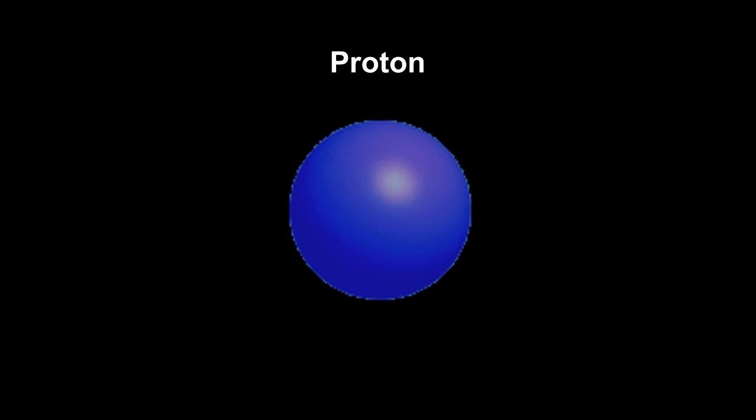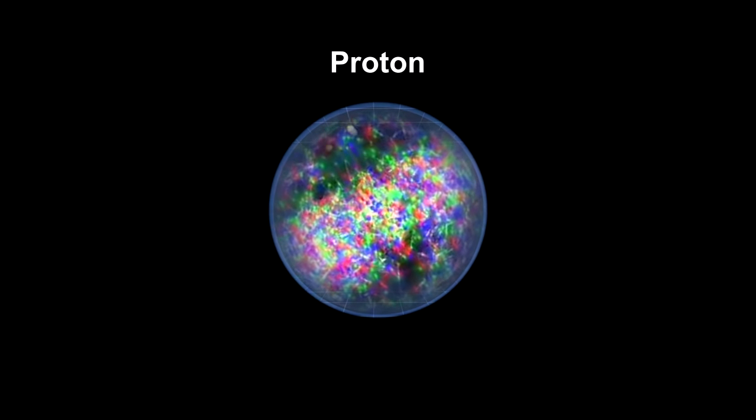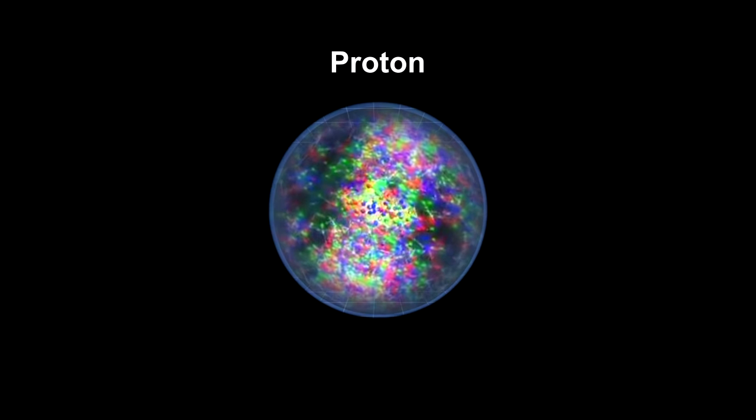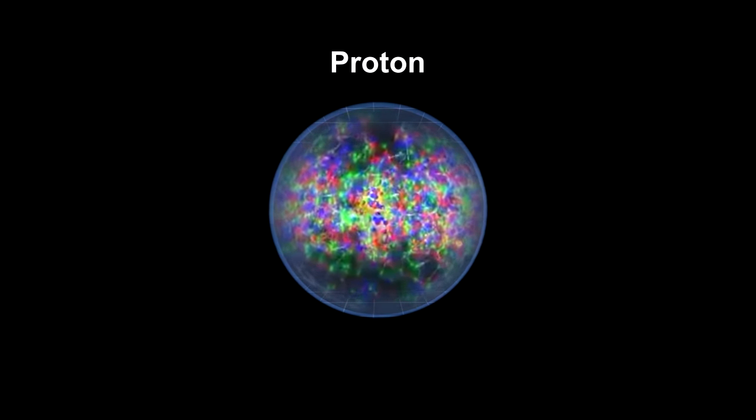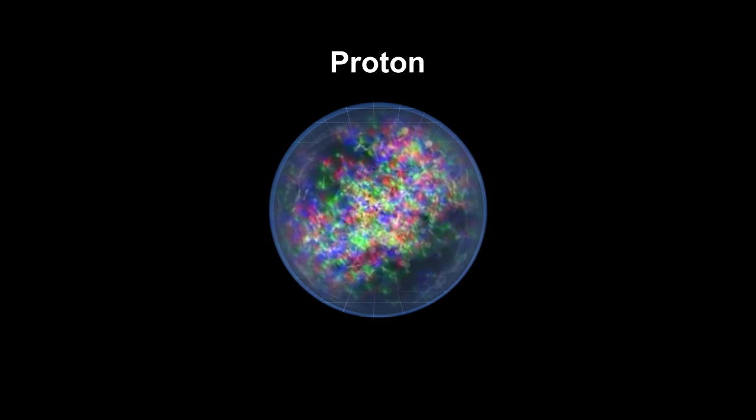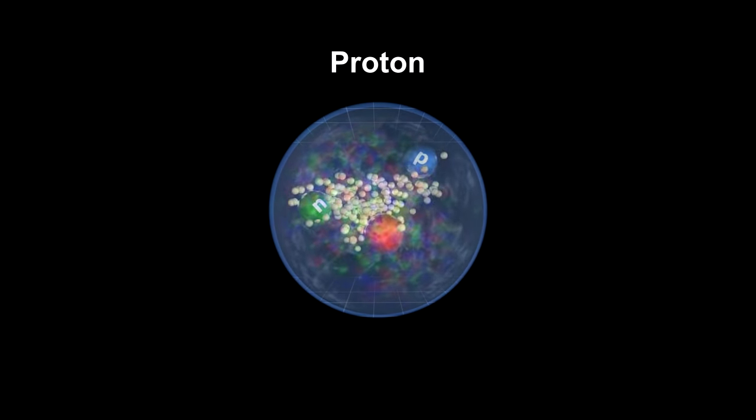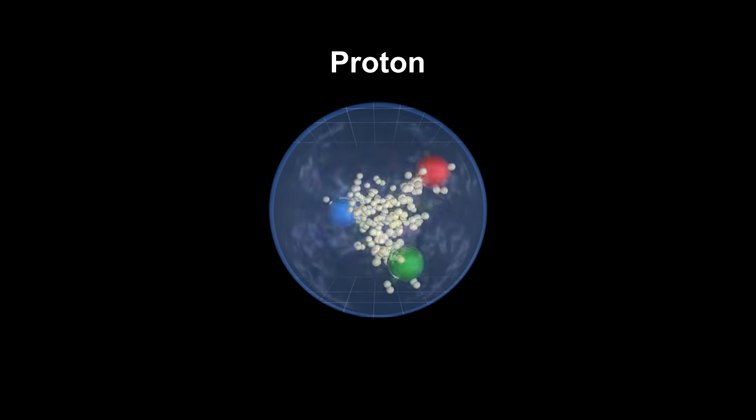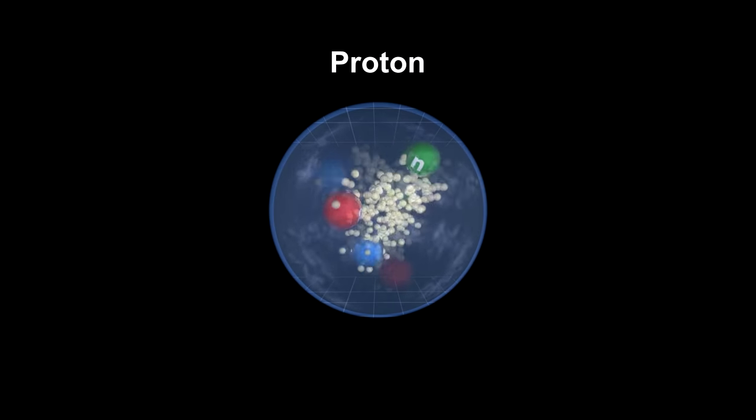Our very idea of what a proton looks like has now shifted from a point particle to a three-part particle to a whirlwind of elementary particle activity. In fact, it is very difficult to distinguish between the disturbances that represent virtual particles and disturbances that represent actual particles in a plasma like this. But for our purposes, we can view a proton as a cloud of gluons holding three quarks together.